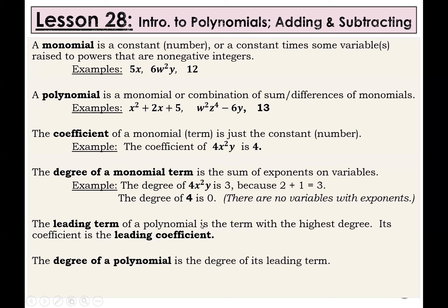The leading term of a polynomial — think of that as being in the front, the first one — is the term with the highest degree. That may or may not actually appear first, but we tend to like things in descending order with the highest degree first. So if you compare the degrees of all the terms, the leading term is the one with the highest degree. Remember, degree has to do with adding those exponents. Its coefficient is the leading coefficient. And finally, the degree of a polynomial is the degree of its leading term. That's a lot of words, and on the next slide we're going to actually apply this and answer some questions.